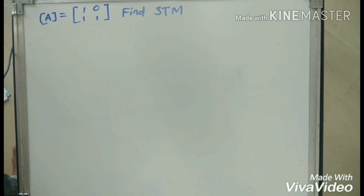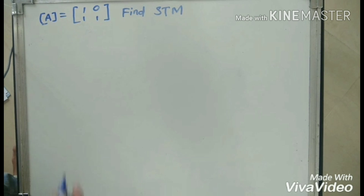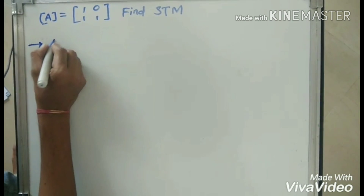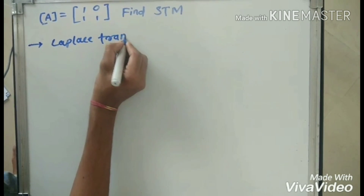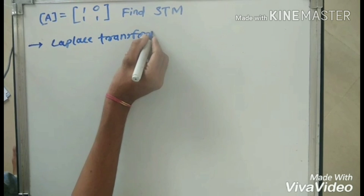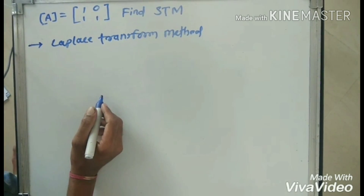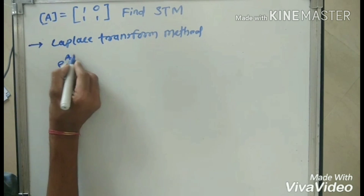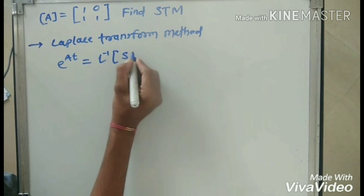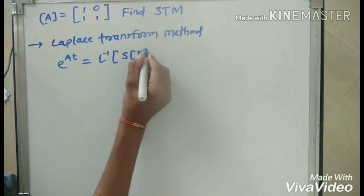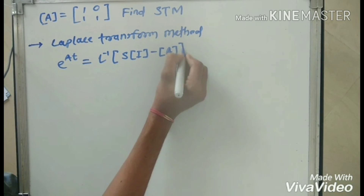Now I will find the state transition matrix by using the Laplace transform method. In this method, we find the state transition matrix phi of t, which equals the inverse Laplace transform of (sI minus A) inverse.